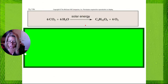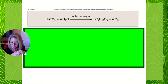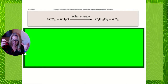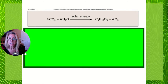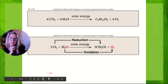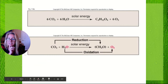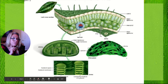Your reactants are solar energy, water, and CO2. Water comes up through the roots and CO2 comes in through the stomatal openings of the leaves; both diffuse into the chloroplast. We can identify what gets oxidized and what gets reduced — CO2 is going to be reduced into carbohydrates and water is going to be oxidized to oxygen.